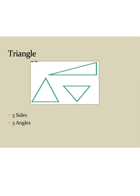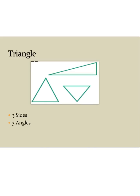A triangle has three sides and three angles. A quadrilateral has four sides and four angles.